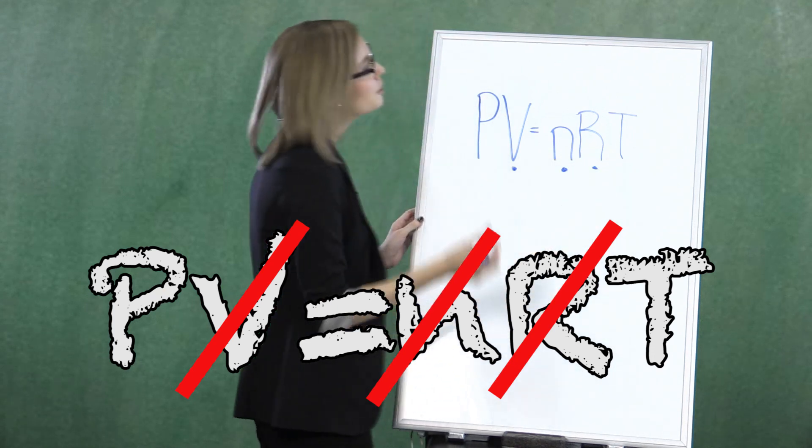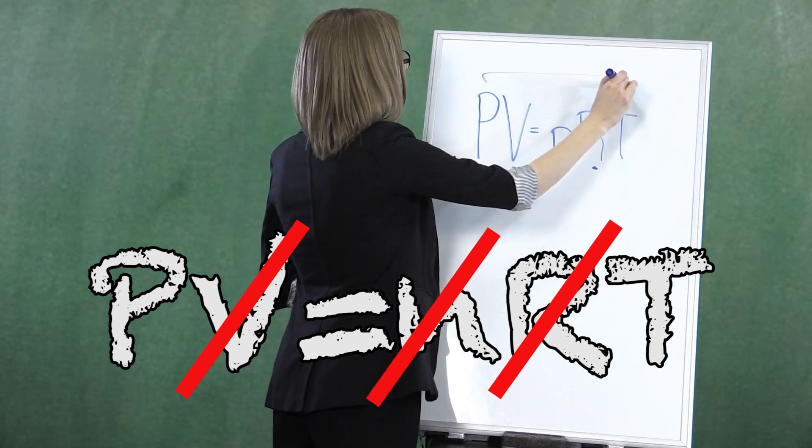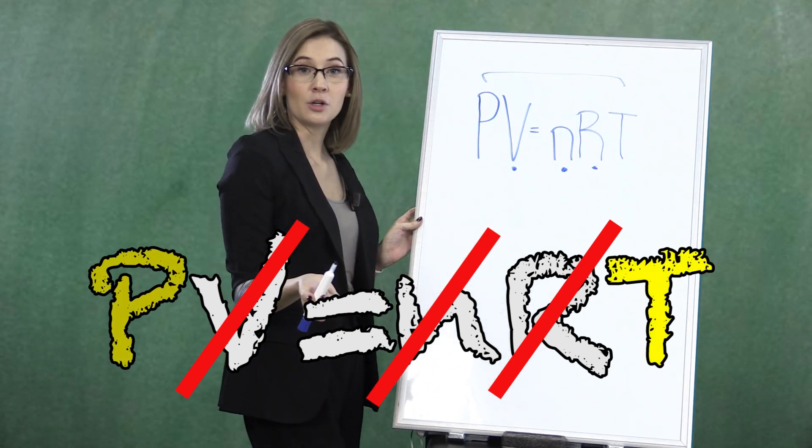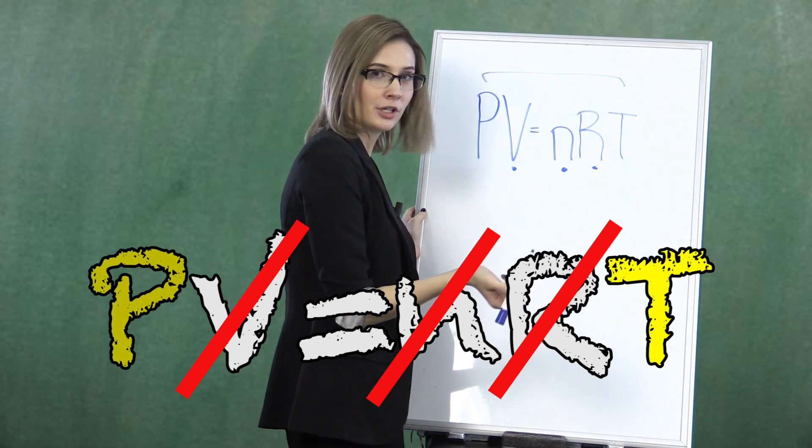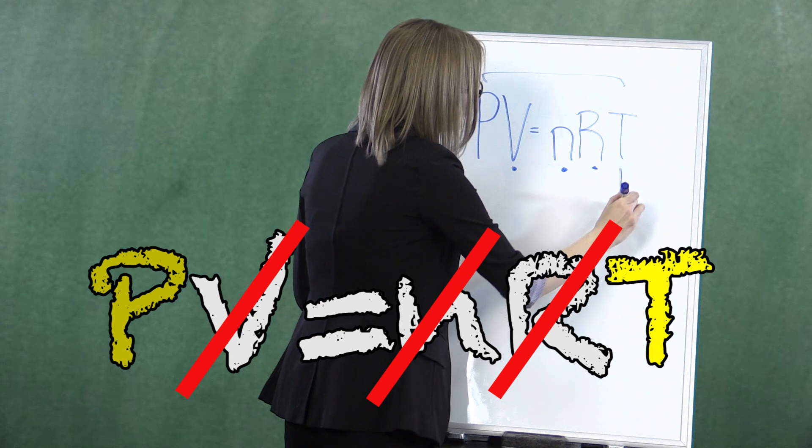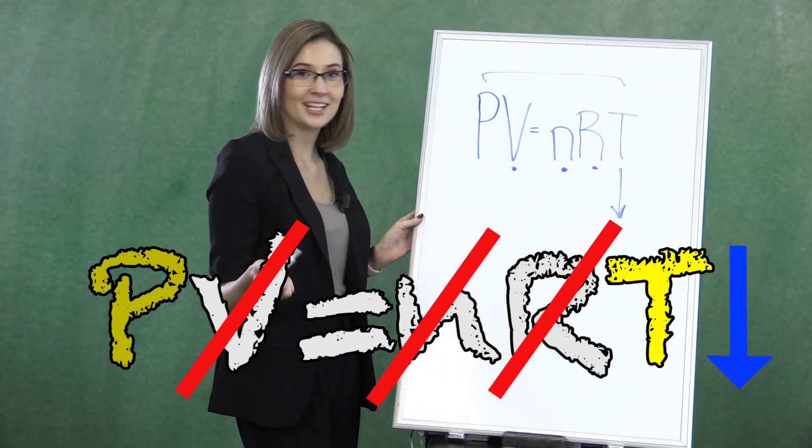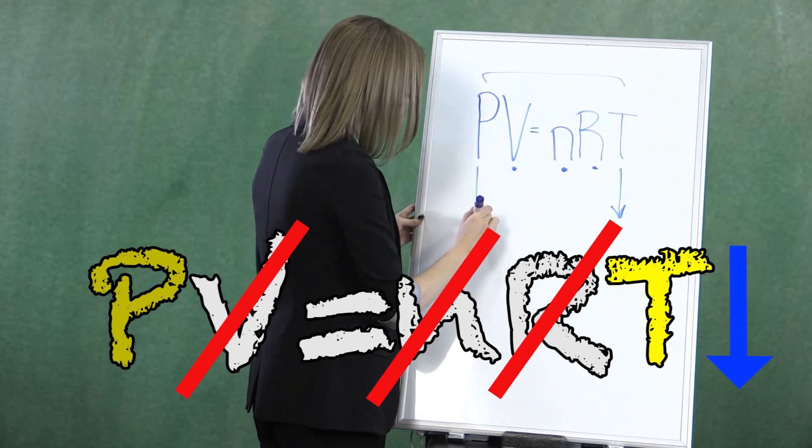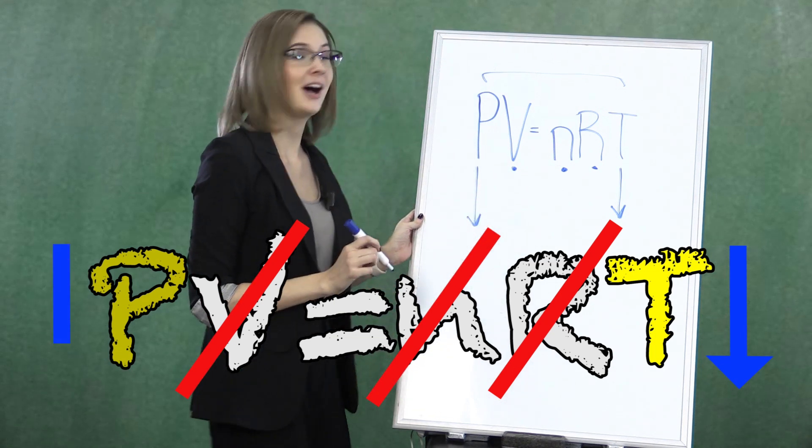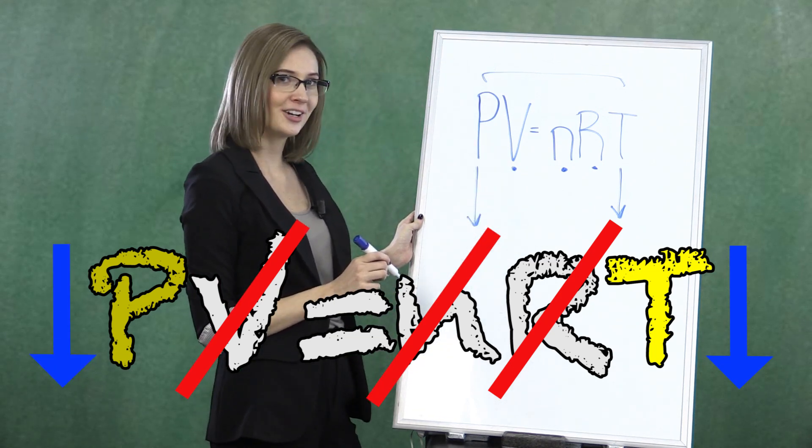That means the only two things we have that could possibly change would be the pressure and the temperature. If it's cold outside one night when you leave your car outside, the temperature of the air inside the tire will drop. That means in order for the tire to stay in equilibrium, the only other thing that could drop is the pressure. And that is why your low pressure tire warning is triggered after a cold night.